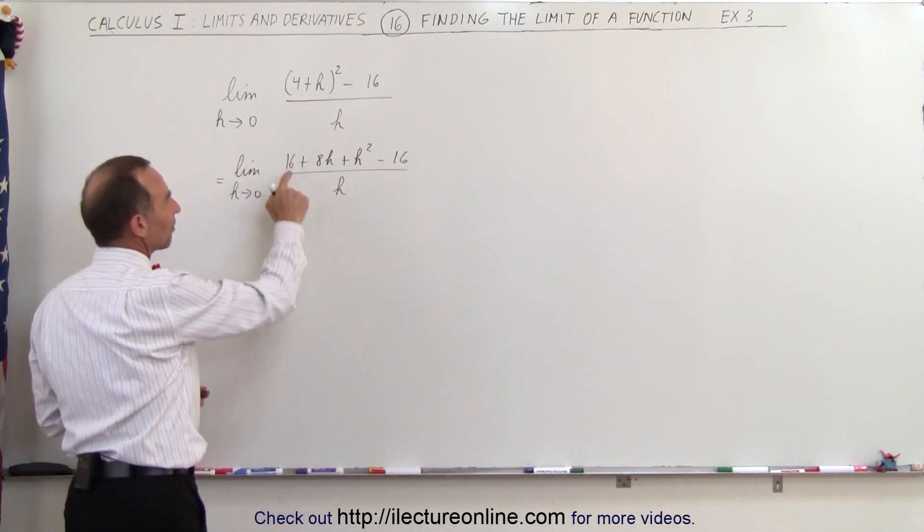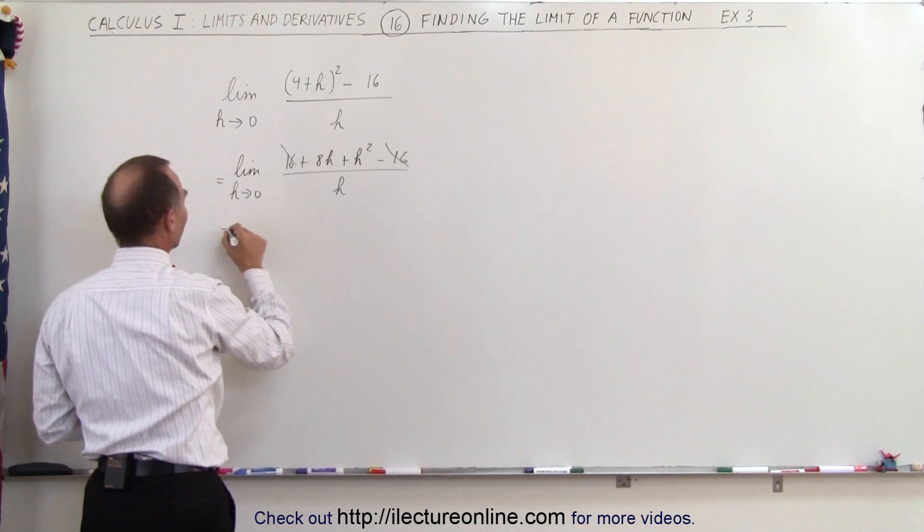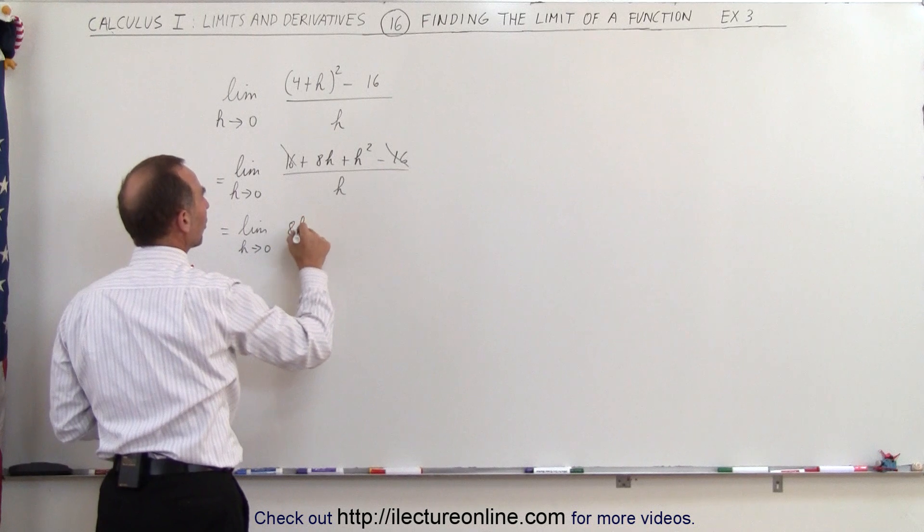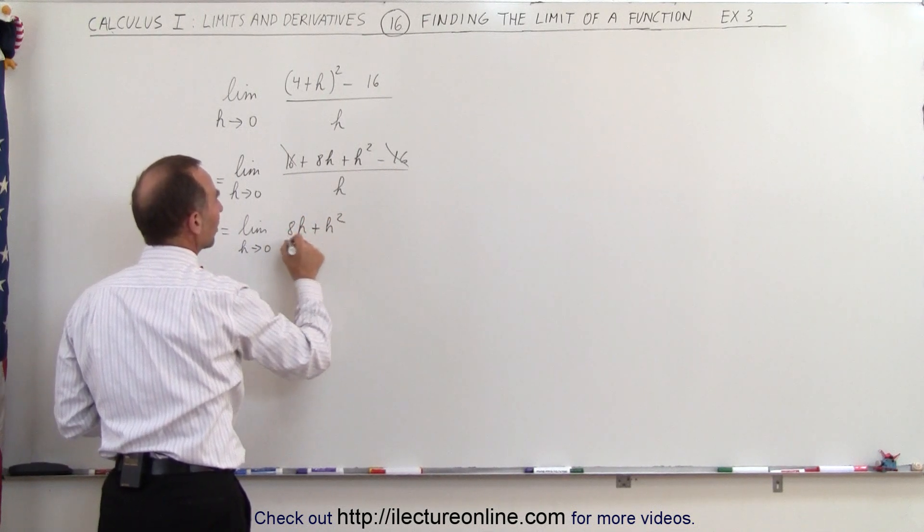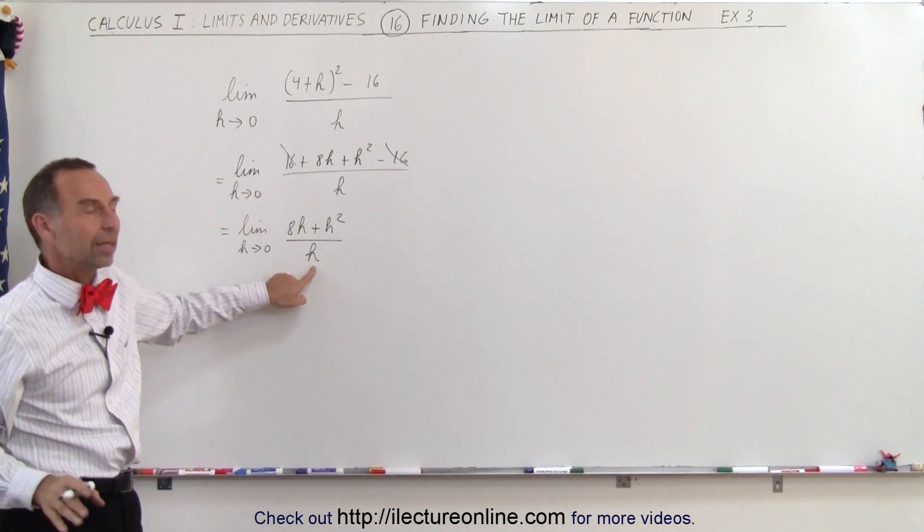All right, now you can see that you have a 16 minus 16 that cancels out, and now we have the limit as h approaches 0 of 8h plus h squared divided by h. Still, I cannot plug in 0 for h because I will get 0 in the denominator.